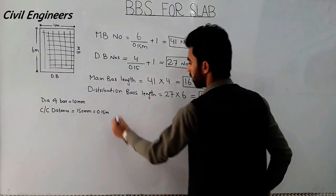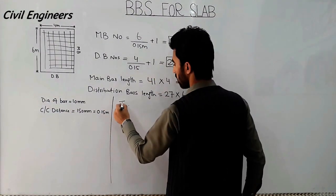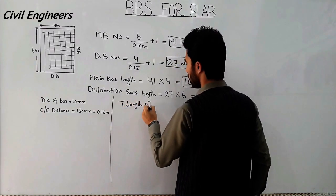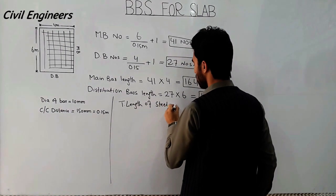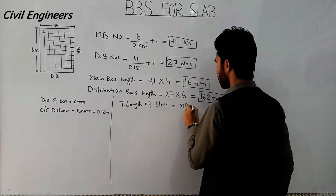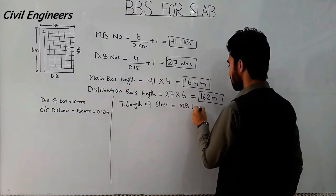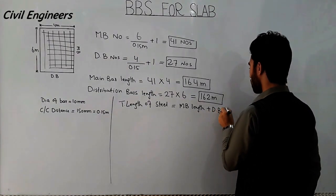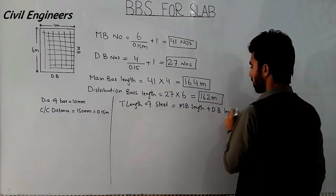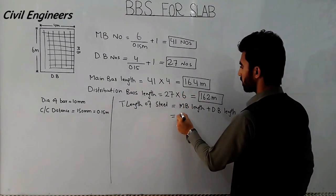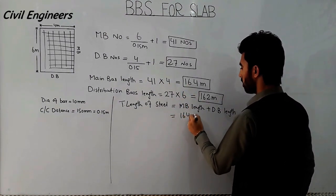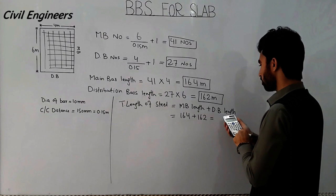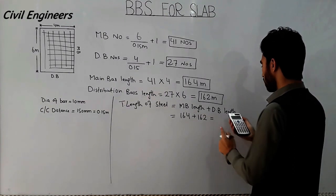Now I will find out the total length of steel for this room. The total length is 164 meters for main bars plus 162 meters for distribution bars, which gives a total of 326 meters.